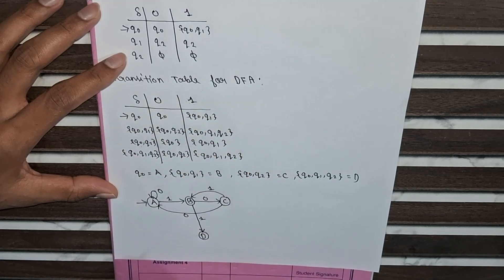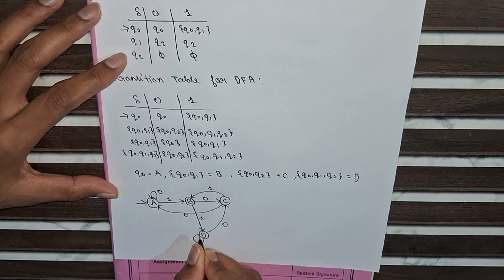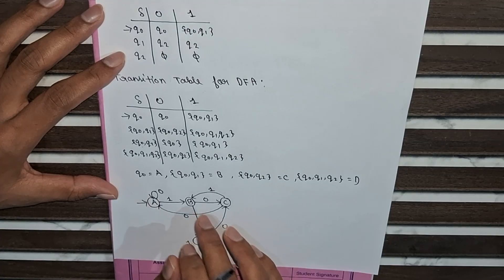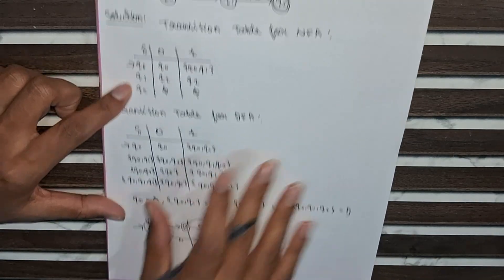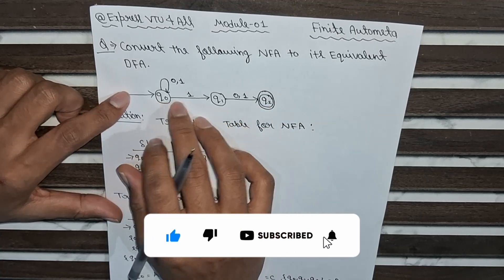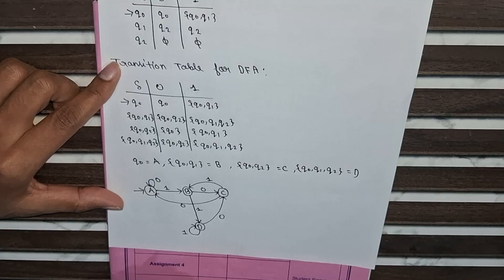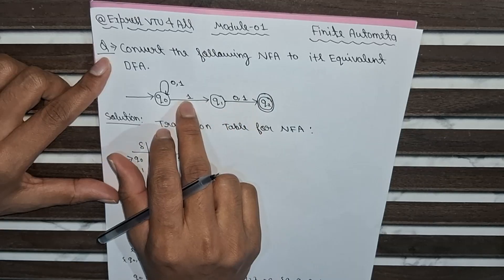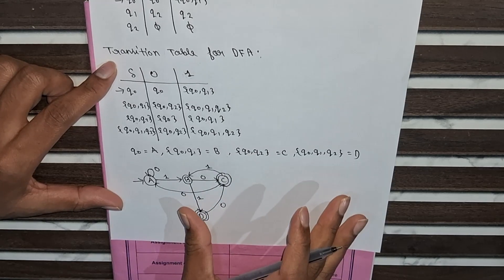From state D with input symbol 0 it goes to q0,q2 which is C. With input symbol 1 it is a self-loop on D. Now the DFA diagram is initialized with state A. We need to choose the final states. In the NFA the final state is q2. The minimum string accepted is '11', so from A with input 1 we reach B, and with another 1 we reach D — so D is a final state. Also '10' is accepted: from A with 1 we go to B, then with 0 to C — so C is also a final state. There are two final states in this DFA. Thank you for watching our video.